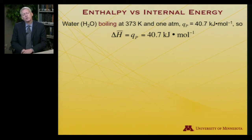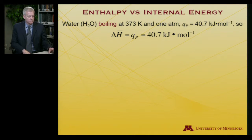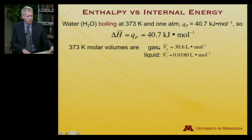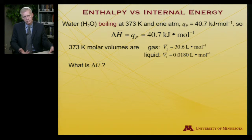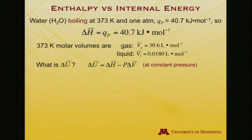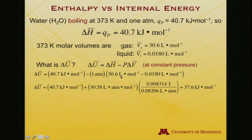Let's consider a different process — now it's boiling. We're at 373 Kelvin, still one atmosphere. The heat required to boil water is 40.7 kilojoules per mole at its boiling point at one atmosphere pressure. So delta H equals QP: 40.7 kilojoules per mole. Now there's quite a difference in molar volumes because the gas occupies much more volume than the liquid. The gas occupies 30.6 liters per mole; the liquid 0.018 liters per mole. The internal energy is the enthalpy minus P delta V. Plugging in the numbers and converting atmosphere-liters per mole to joules, I end up with 37.6 kilojoules per mole.